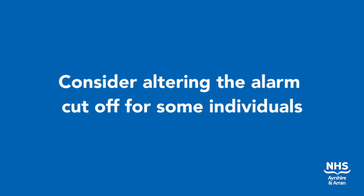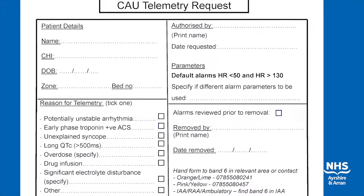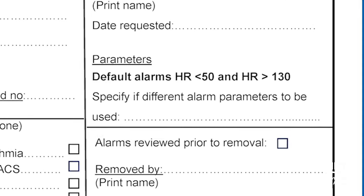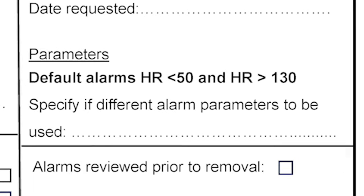The request form also prompts the requester to consider if alternative heart rate alarms might be more appropriate for that individual. For example, if the patient's normal resting heart rate is 47 beats per minute, you may wish to lower the alarm cut off slightly. This must be clearly stated on the request form and should only be considered in a small minority of patients where it is appropriate to do so.